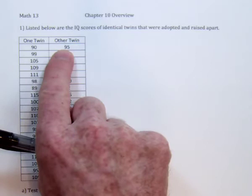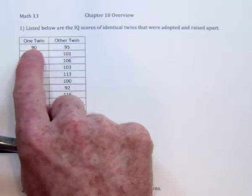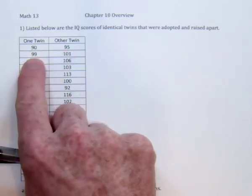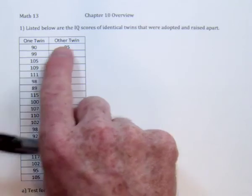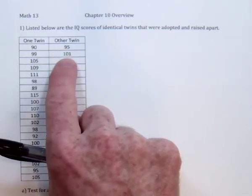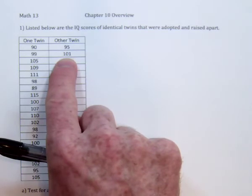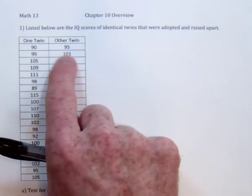The idea with a linear correlation is we're trying to see, is there a relationship? If you have this number get bigger, is this number also going to get bigger? And is there some type of equation that predicts what this number is going to be if you know what this one is?